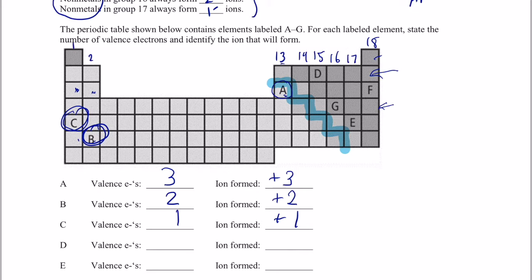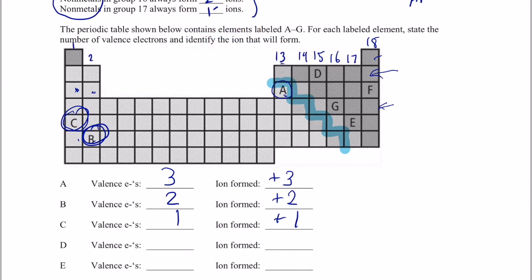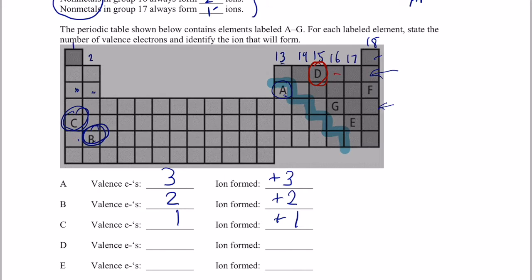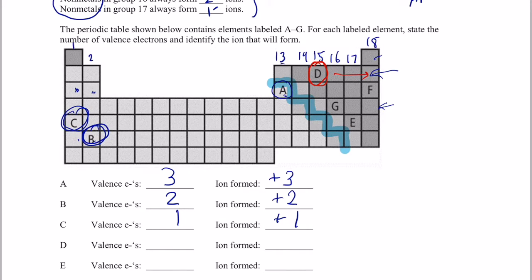Element D. Element D is over here. Let's change our pen to red. There's element D right there in group 15. Doesn't it gain one, two, three to become like the noble gas ahead of it? So it has five valence electrons. And it will form a negative three ion.